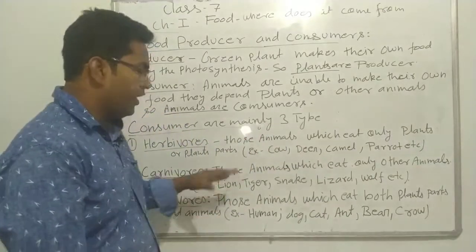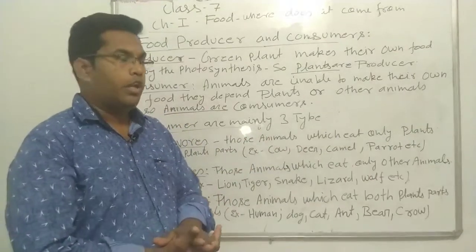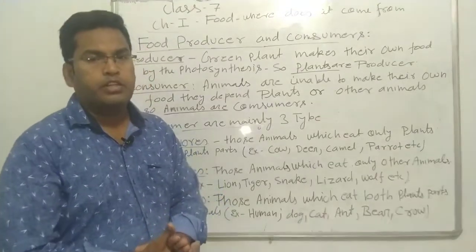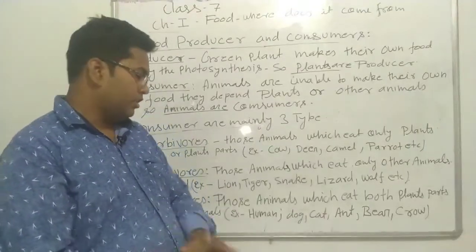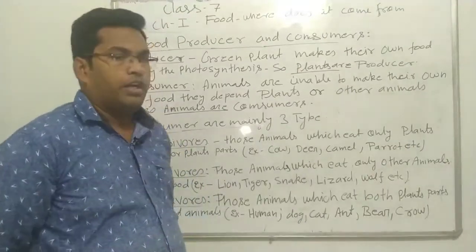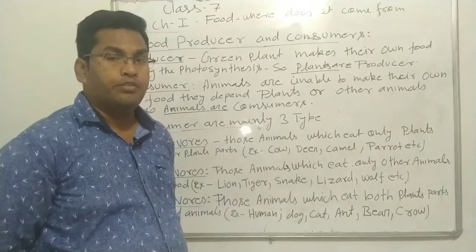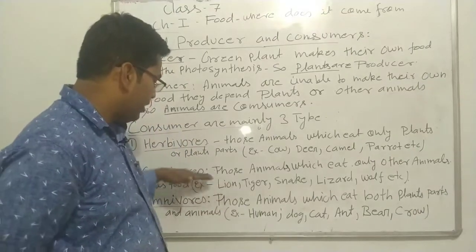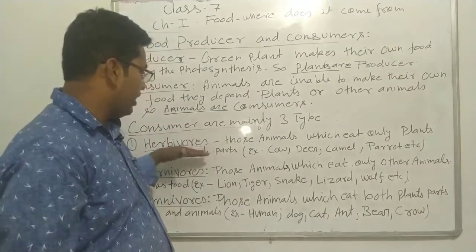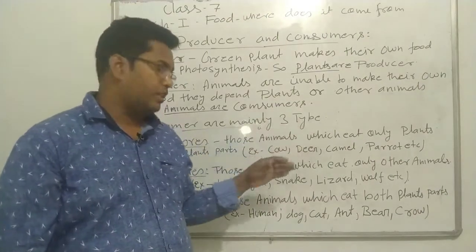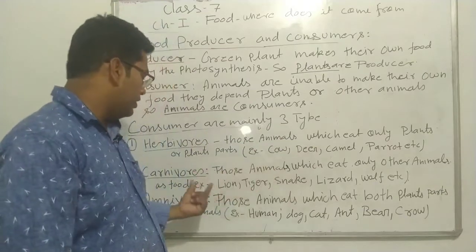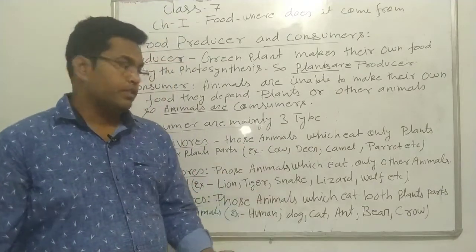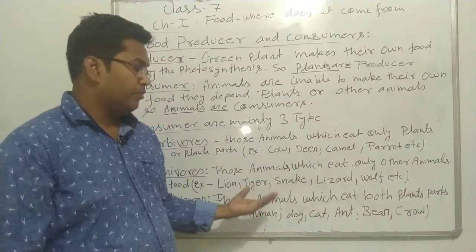Just like a lion — you see, a lion does not eat grass. A lion never uses any plants like grass and leaves. A lion eats only small animals like deer.